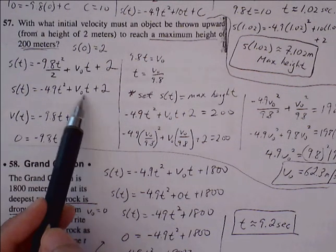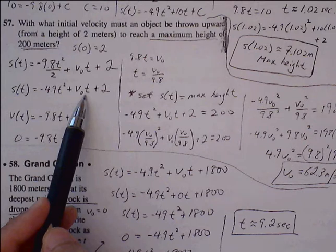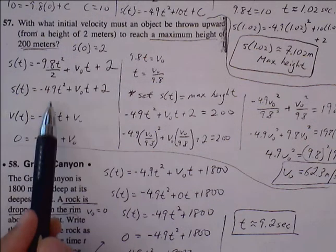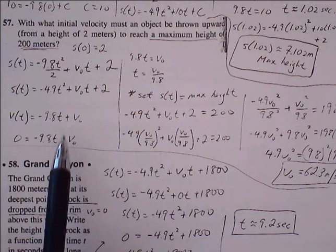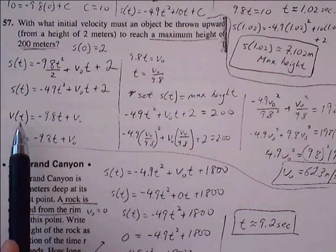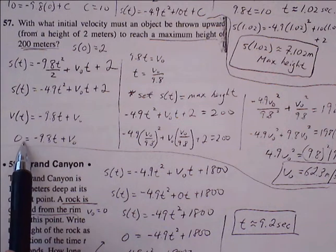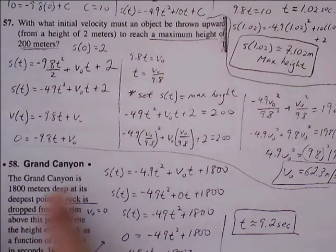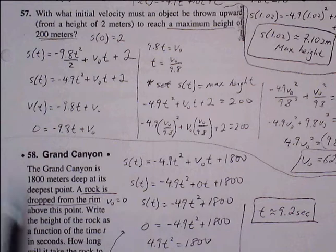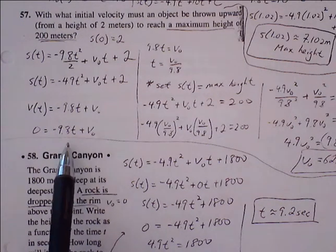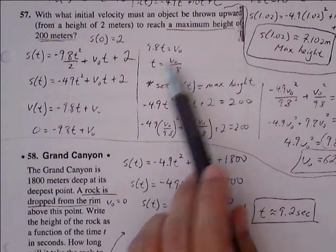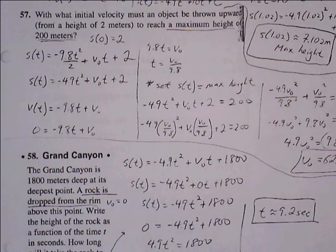We want to find out what the initial velocity is. We can do that by solving for v₀ or solving for t first. We know the maximum height will occur when velocity is 0, so we'll place 0 in for velocity. Here we can solve for time. Bring the v₀ over to one side. We get 9.8t equals v₀. Divide both sides by 9.8, so t equals v₀ over 9.8.